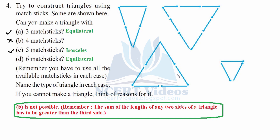With six matchsticks, yes — each side represents two matchsticks, forming an equilateral triangle. The reason four matchsticks cannot form a triangle is that the sum of the lengths of any two sides must be greater than the third side, which is not satisfied when all matchsticks are equal. With nine matchsticks, it will also form an equilateral triangle. That was question four.